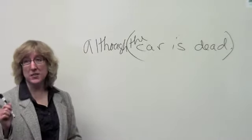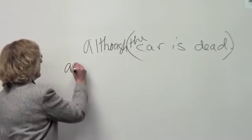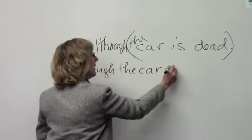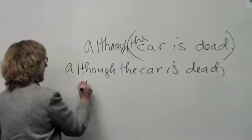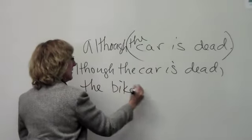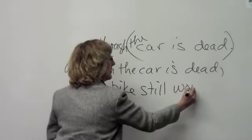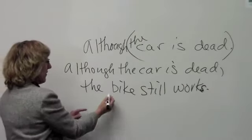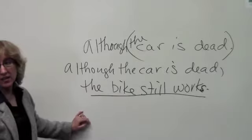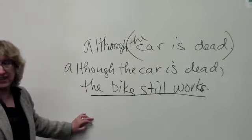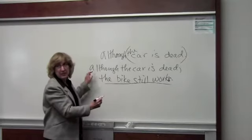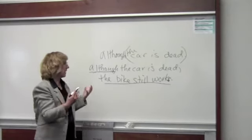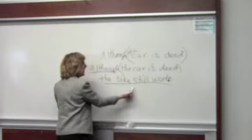Now, sometimes a sentence has more than one clause. Although the car is dead, the bike still works. See, there's my plural. Okay, so here we have the main clause. The bike still works is the main part of the sentence, also called an independent clause, right? But this part up here is subordinate, because it has this little beginning section that keeps it from expressing a complete thought. So this is a subordinate clause. This is a main clause.